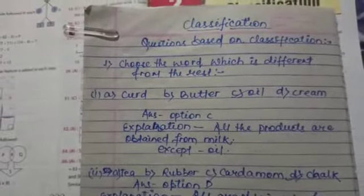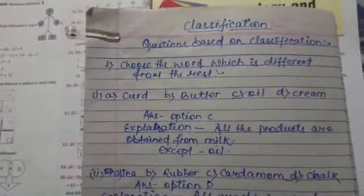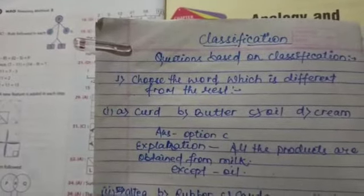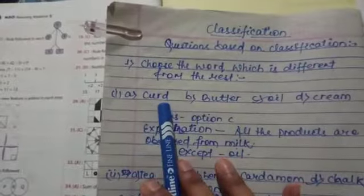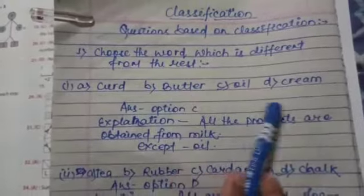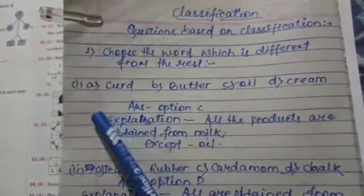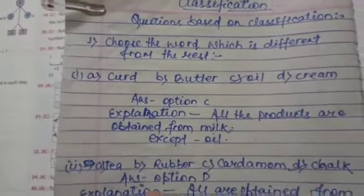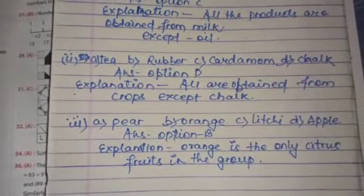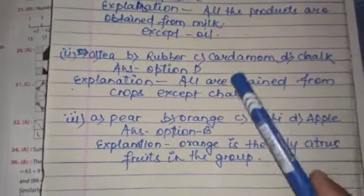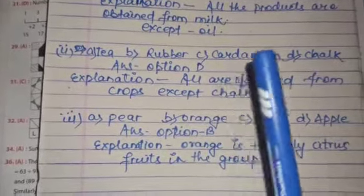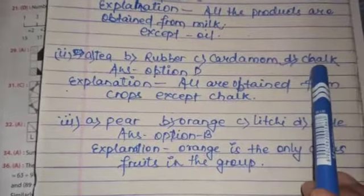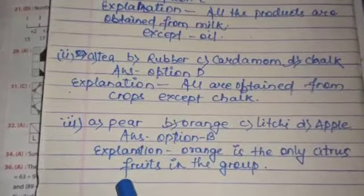Here are some classification questions I will explain. First, choose the word which is different from the rest. Curd, Butter, Oil, Cream. Option D is the correct answer. All the products are obtained from crops except chalk.